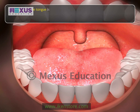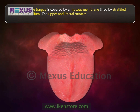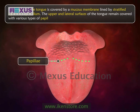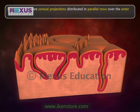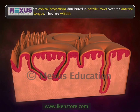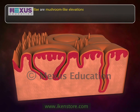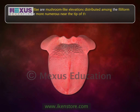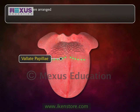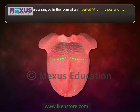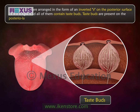The surface of the tongue is covered by a mucous membrane lined by stratified squamous epithelium. The upper and lateral surfaces of the tongue are covered with various types of papillae. Filiform papillae are conical projections distributed in parallel rows over the anterior two-thirds of the tongue; they are whitish and contain no taste buds. Fungiform papillae are mushroom-like elevations distributed among the filiform papillae, more numerous near the tip of the tongue, and most contain taste buds. Vallate papillae are arranged in an inverted V on the posterior surface of the tongue and all contain taste buds.